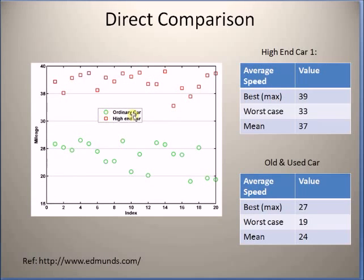Here the green circles represent an ordinary car and the red squares represent a high-end car. We can clearly see that the high-end car has better mean and best mileages compared to the ordinary car. That is, the mean mileage is 37 and the best mileage is 39 for the high-end car, compared to 24 and 27 respectively for the ordinary car. This is the type of information used on websites such as edmunds.com for selling and providing information on used cars.